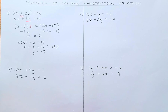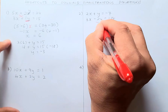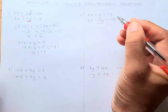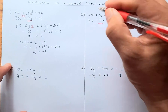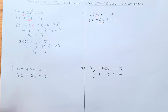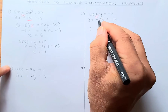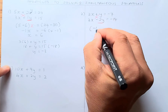Now we shall do the second example. The second example is on the right-hand side here. So 2x plus y equals negative 7, and 3x minus 2y equals negative 14. So the pivot is this number here — minus 2y. So you're going to cross multiply. So the first number: minus 2 times 2 is going to be minus 4.